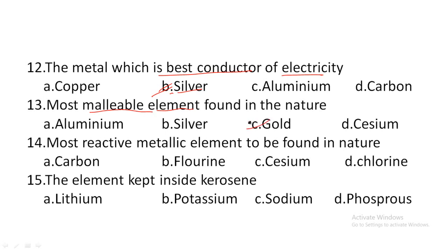Next: the most reactive element found in nature — option A: carbon, option B: fluorine, option C: cesium, option D: fluoride. Among the 118 elements, fluorine and cesium are the most reactive elements.